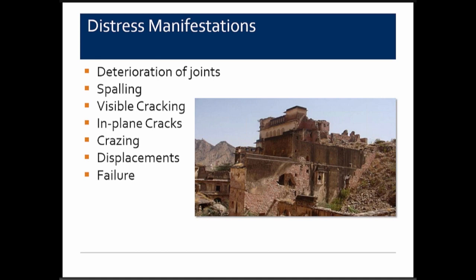Distress mechanisms manifested in terracotta are similar to masonry walls: deterioration of joints, spalling both deep and shallow, visible cracking on the outside, in-plane cracking parallel with the face that can't be seen visually and may only be detected by sounding, crazing, displacement of units, and ultimately failure.